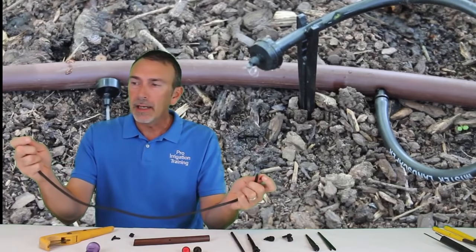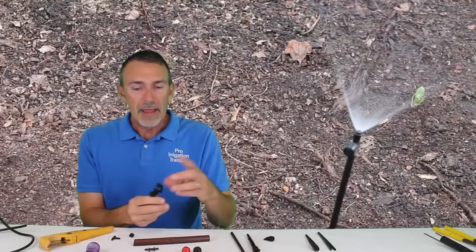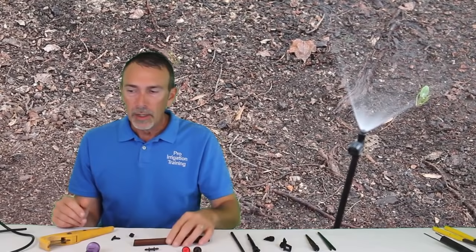run our spaghetti line or our quarter inch delivery tubing out into a pot or to a plant and supply it there. And also, we can use some micro sprays that we can put out there that will spin around or spray into an area that we need.